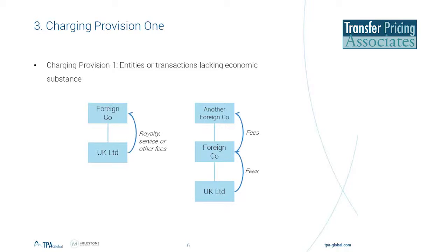There are two key charging provisions. The first is looking at entities or transactions lacking economic substance. The title of this provision is a bit misleading because it doesn't really care much for substance in the traditional sense — so looking at where functions, assets, and risks are located. When assessing whether Charging Provision 1 applies, the key question is whether a UK company has made a payment to a foreign connected party, either directly or indirectly through a series of other UK companies. If this is the case, then you must consider how the DPT will apply.